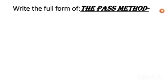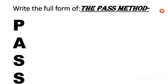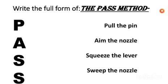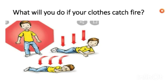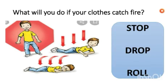Write the full form of the PASS method used while putting out fire with a fire extinguisher. P stands for Pull the pin. A stands for Aim the nozzle. S stands for Squeeze the lever. S stands for Sweep the nozzle. If your clothes catch fire, remember to stop, drop, and roll — don't run in panic. If anyone else is suffering, suggest them not to run but to stop, drop, and roll.